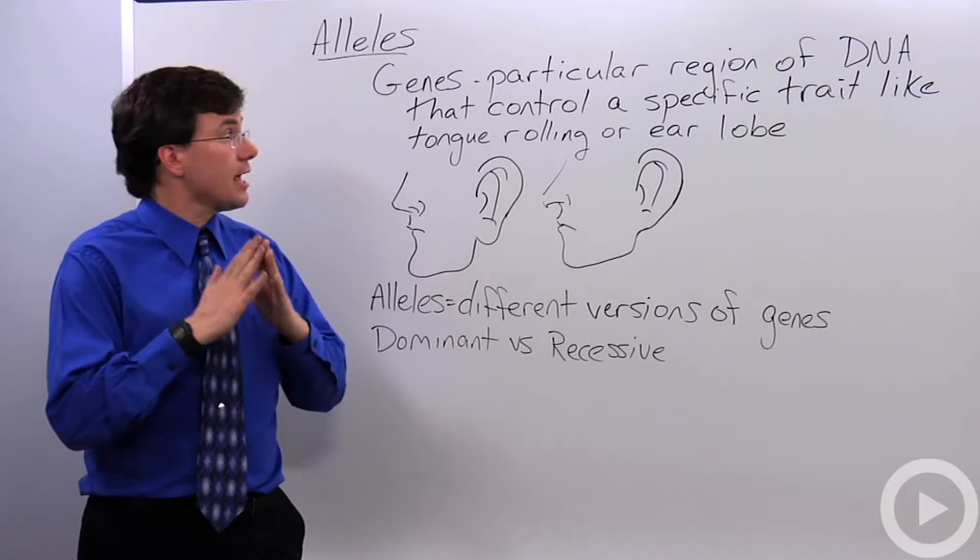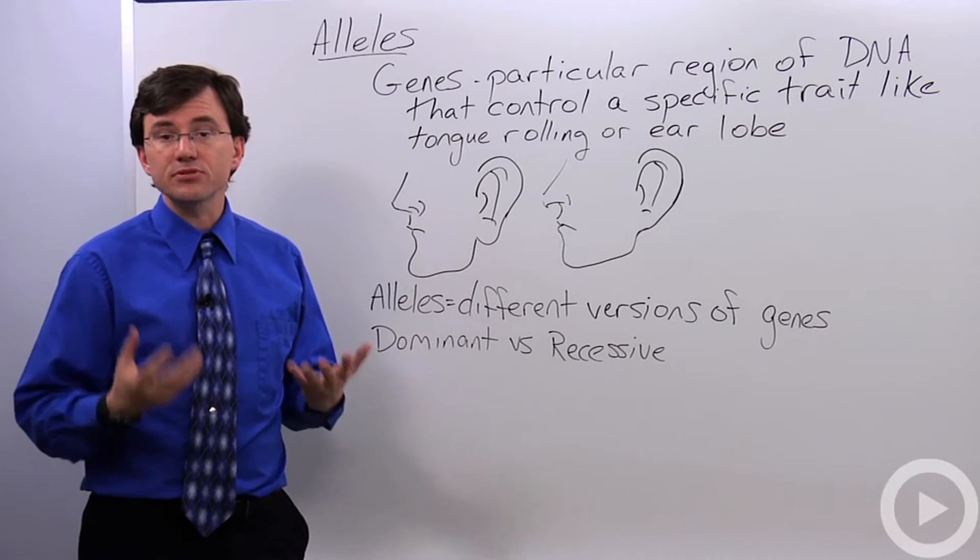So let me first define what a gene is so then I can explain exactly what an allele is in that context. So a gene is a particular region of your DNA that controls a specific trait.